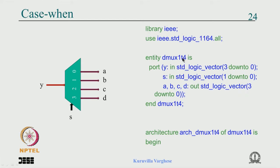The select line is 2 bits because there are 4 outputs: if it is 0 then y goes to a, 1 then y goes to b, and so on. The library declaration and entity define y as a 4-bit vector, s as a 2-bit vector, and a, b, c, d as 4-bit vector outputs. The architecture declaration region before the begin has nothing to declare; in the statement region we use a case/when.